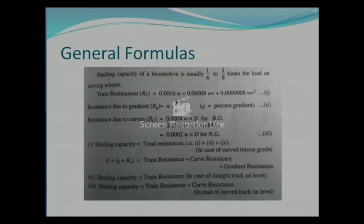Before studying this problem, we have to look into some of the general formulas used. I have explained these formulas: train resistance or total resistance is equal to RT1 plus RT2 plus RT3. I have written these on the board. Hauling capacity is again the capacity to pull something.